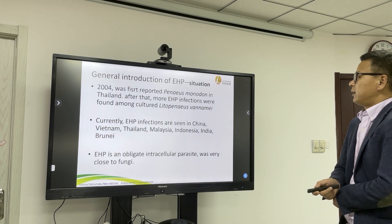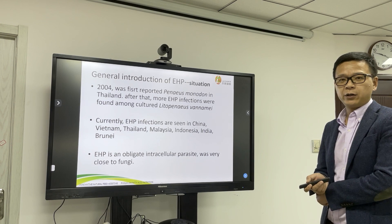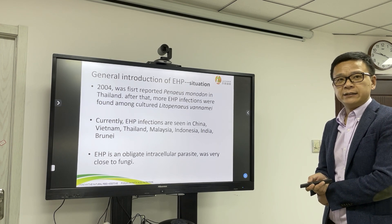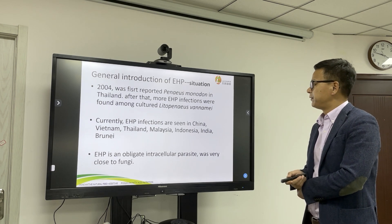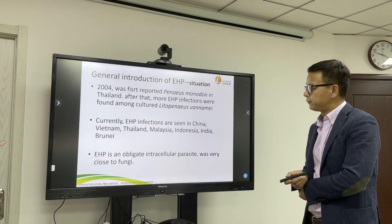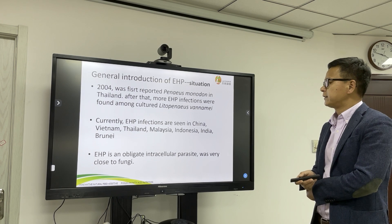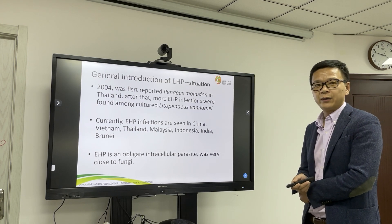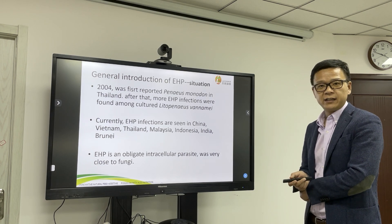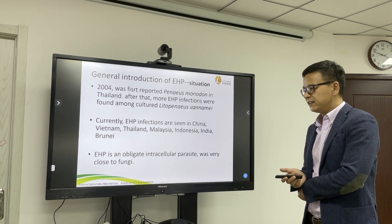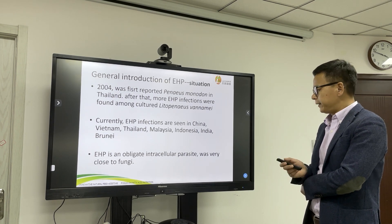EHP was first reported in Thailand in 2004. After that, more EHP infection cases were found among cultured shrimp. Currently, EHP infections are seen in China, Vietnam, Thailand, Malaysia, Indonesia, India, and Brunei — all in Asia.